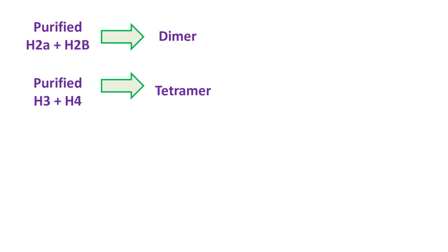If H2A and H2B are incubated together, then they form a dimer, whereas histone H3 and H4 form a tetramer.